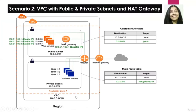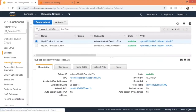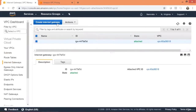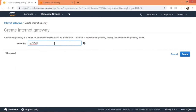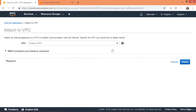Name it 'My VPC IGW' and click Create. Then click Actions, Attach to VPC, select My VPC, and click Attach. We have now provisioned our internet gateway. The next step is to provision an EC2 instance in the public subnet and associate an elastic IP. But first, we need to change the route table for the public subnet to establish internet gateway connectivity.